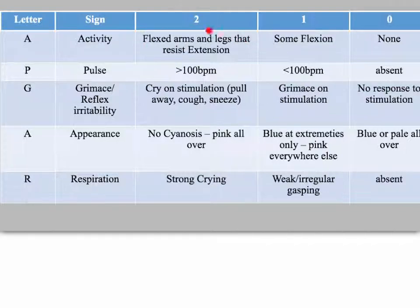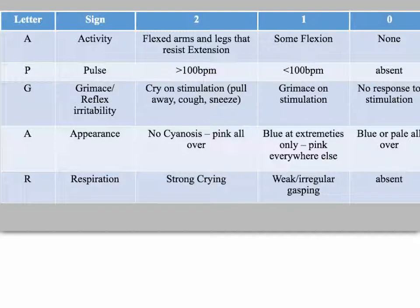For Activity, you're looking for flexion. Will the baby flex against resistance? If yes, the score is 2. If there's some flexion but it's not strong, it's a score of 1. No flexion at all is a score of 0.